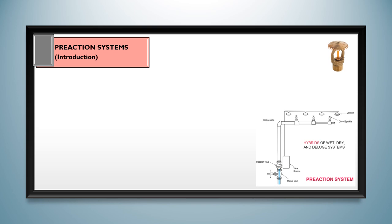Of all the sprinkler systems, perhaps this is the most complicated type. They utilize closed sprinklers connected to the piping network, which contains air above the pre-action valve, as you can see from the figure on your screen. The system piping is pneumatically pressurized for supervisory purposes only.